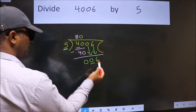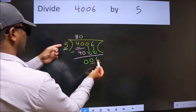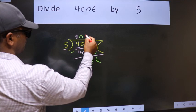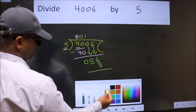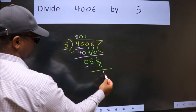So, 6. A number close to 6 in the 5 table is 5 times 1 equals 5. Now we subtract and we get 1.